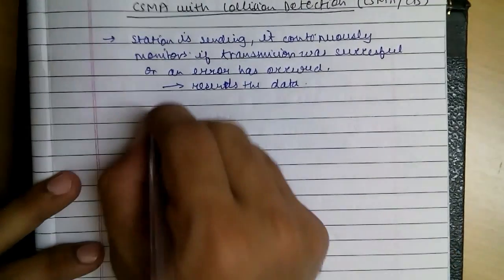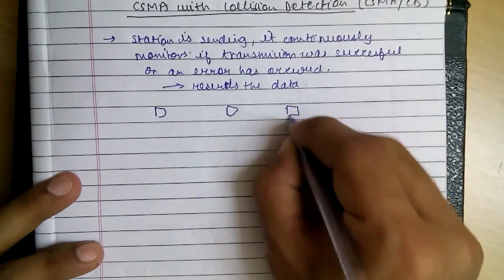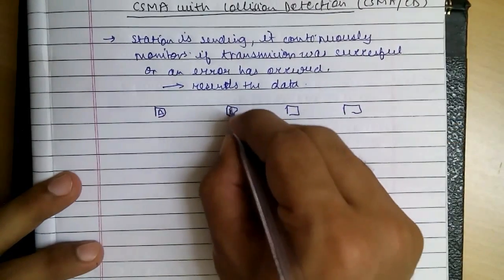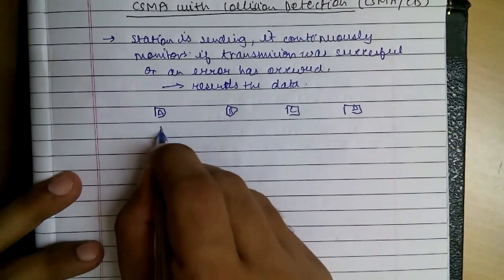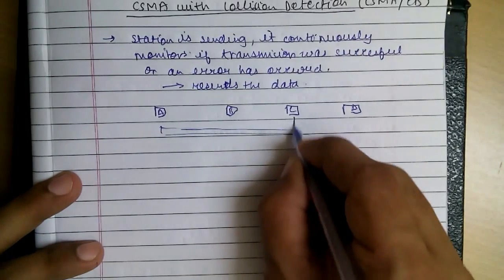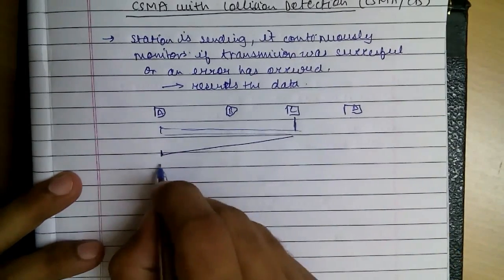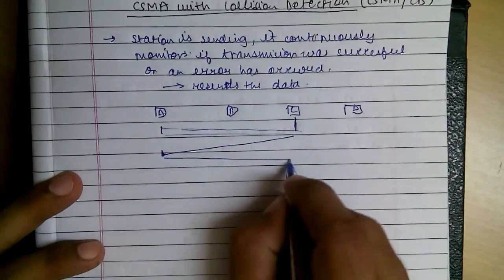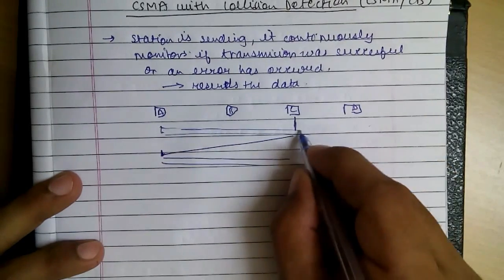So say this is A, B, C, D — and A is sending data. At this time a collision occurs, it detects the collision, then it again sends the data. It wants to send to D.